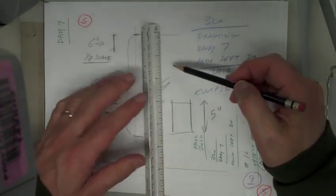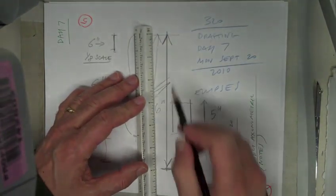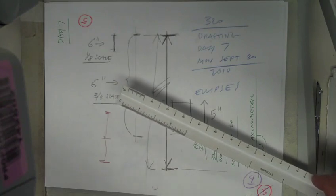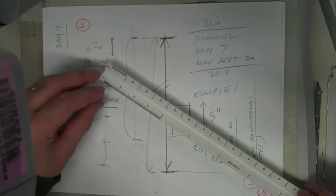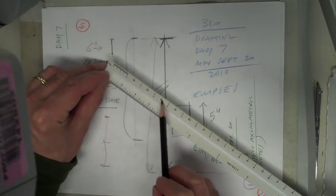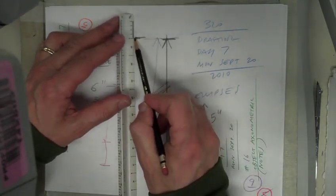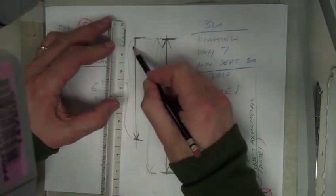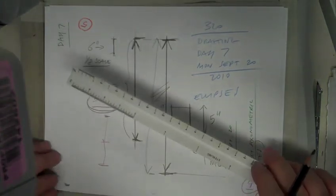For example, six inches in real life — if you reduce it using three-quarter scale, you look for six on the three-quarter scale, start at zero, count down six, and that gives you the reduced measurement. You might want to practice using the scale a little bit.